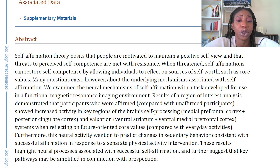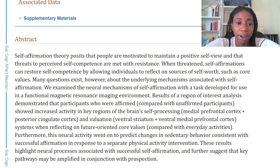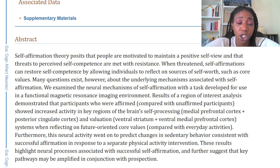We examine the neural mechanisms of self-affirmation with a task developed for use in a functional magnetic imaging environment. Results of a region of interest analysis demonstrated participants who were affirmed compared with unaffirmed participants showed increased activity in key regions of the brain's self-processing — medial prefrontal cortex and posterior cingulate cortex — evaluation, ventral striatum, and ventral medial prefrontal cortex systems when reflecting on future-oriented core values compared with everyday activities. Furthermore, this neural activity went on to predict changes in sedentary behavior consistent with successful affirmation in response to a separate physical activity intervention. These results highlight neural processes associated with successful self-affirmation and further suggest that key pathways may be amplified in conjunction with prospection.